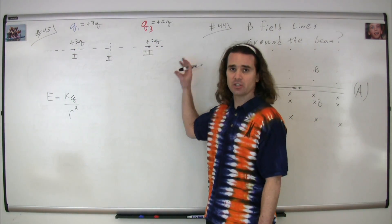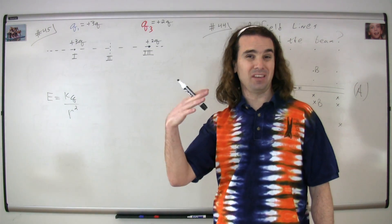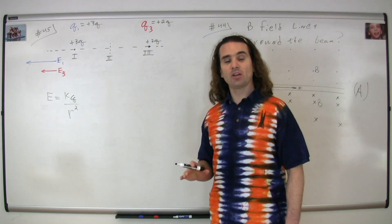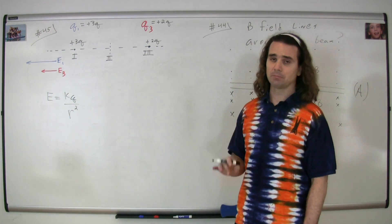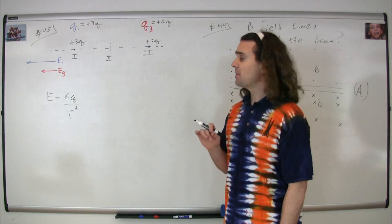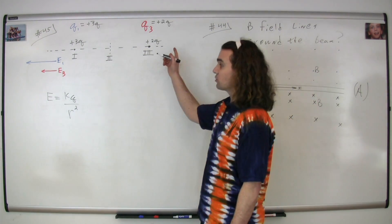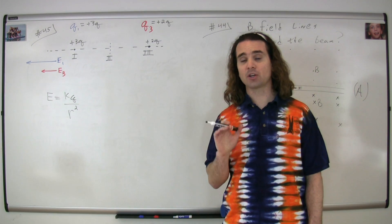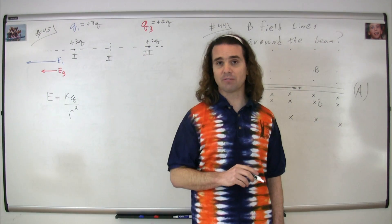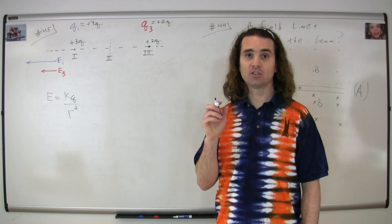Now we're going to look at the various regions and talk about the components of the electric field — the electric field caused by charge one and charge three — and figure out the options for the net electric field in those regions. To the left of charge one: because charge one is positive, the electric field to the left caused by charge one will be to the left. And because charge three is also positive, the electric field to the left caused by charge three is also to the left. Both fields add together, so they cannot sum to zero. Therefore, the correct answer cannot be to the left of charge one.